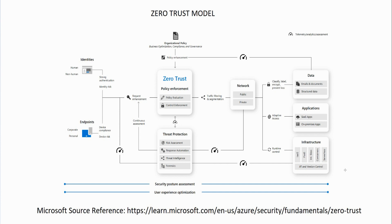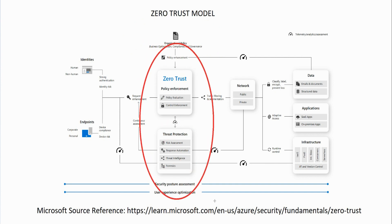The administration of infrastructure is also controlled by the concept of JIT — Just In Time administration. A company can also draft an organizational policy document that outlines what their goals are. That's a good strategy, and from there you can create that based on the compliance policy and conditional access policy.